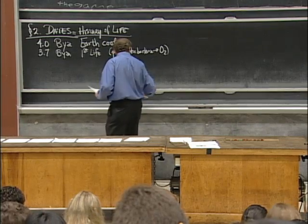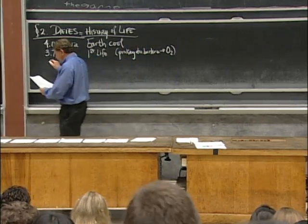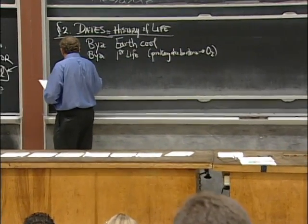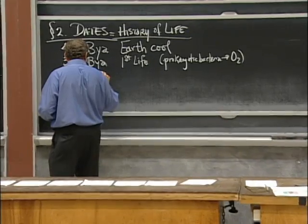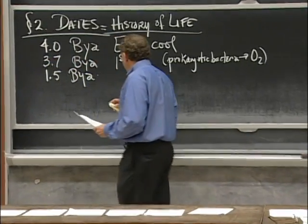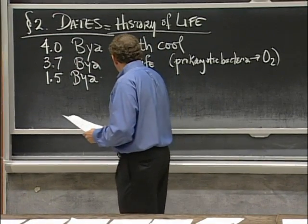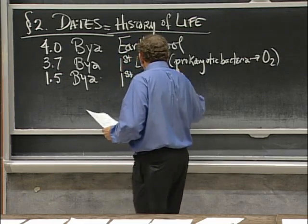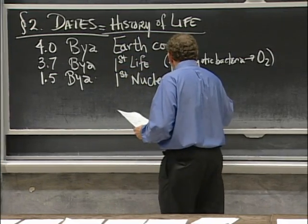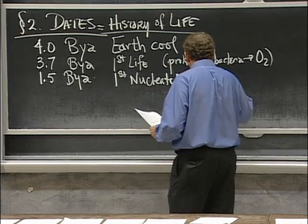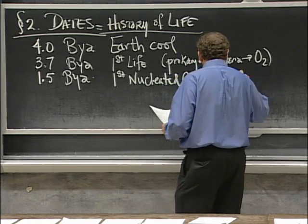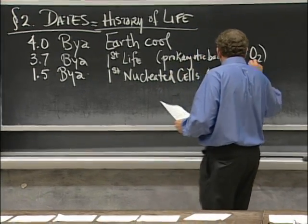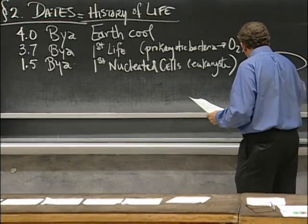And they played a very important role, for example, in changing the entire atmosphere of the Earth to contain oxygen, which made possible other things. So in shaping the content of oxygen in the atmosphere. So 1.5 billion years ago, one has a totally amazing invention, which is the first nucleated cells. These bacteria lack nuclei. Here, we have nucleated cells, eukaryotes, major event.